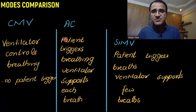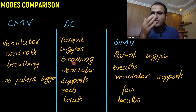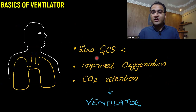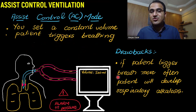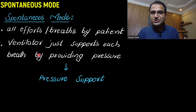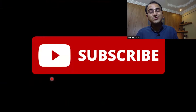A simple comparison: in CMV, the ventilator controls everything — no patient trigger, patient is sedated and paralyzed. In AC mode, the patient triggers some breaths but mainly all breathing is done by the ventilator. In SIMV mode, the patient triggers most breaths but the ventilator supports a few. In summary, we covered indications, volume and pressure control, CMV, AC, high peak pressure alarms, flow charts, SIMV, pressure controlled ventilation, spontaneous mode, and how to liberate a patient from the ventilator.